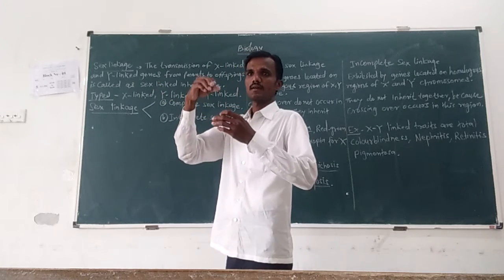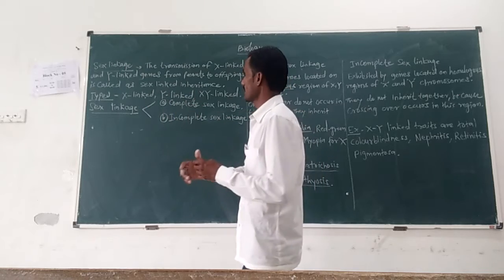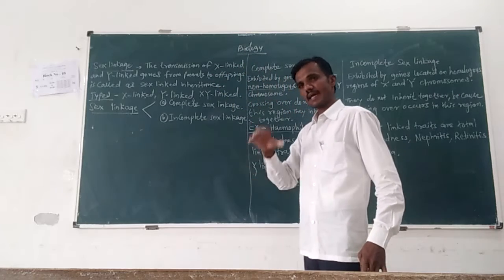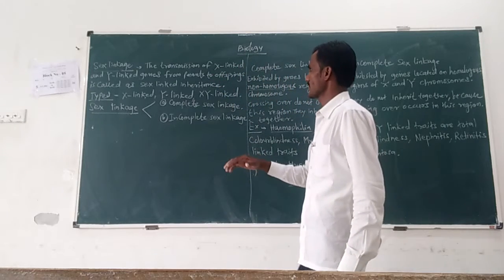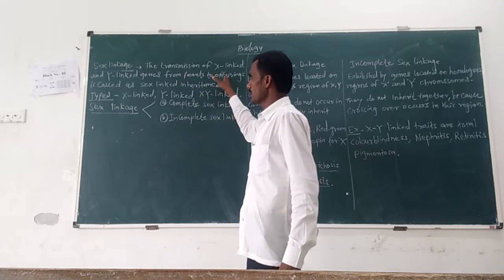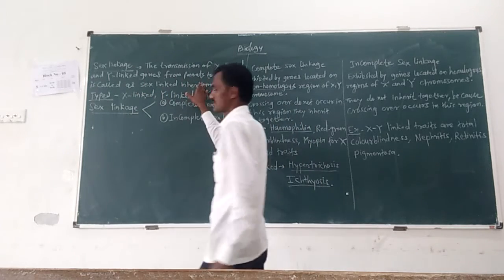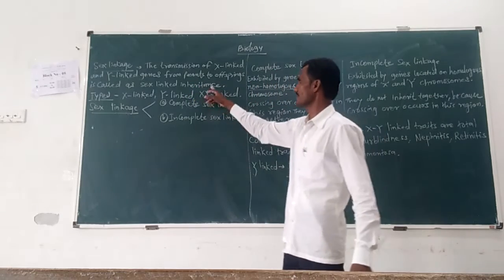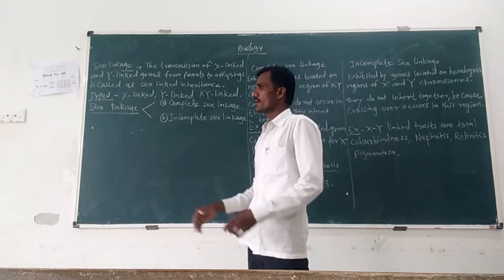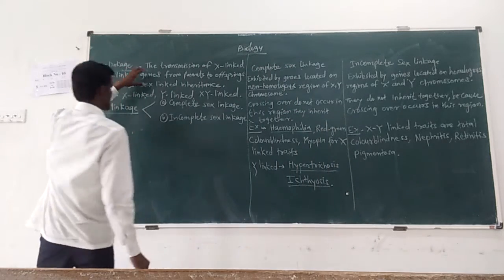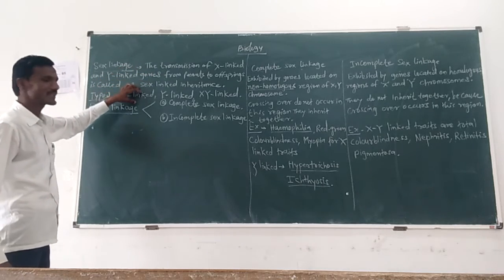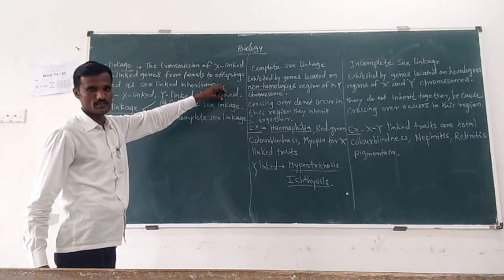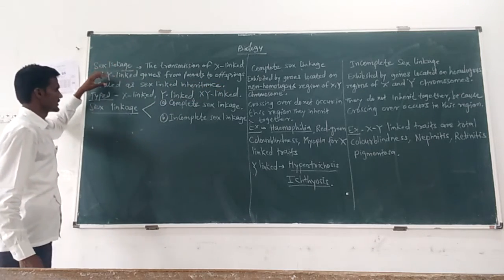Transmission means one generation moving to the next generation. The transmission or inheritance of X-linked or X and Y-linked genes from parents to offspring is called sex-linked inheritance. Common examples of sex-linked inheritance include X-linkage, Y-linkage, and X-Y linkage.